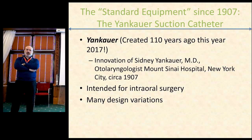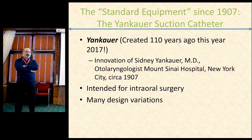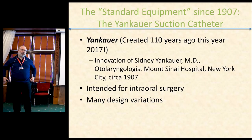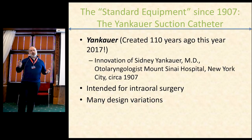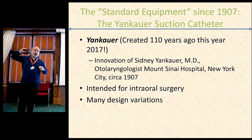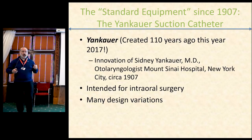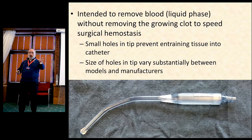The standard equipment we have available was invented over 110 years ago in New York City by Sidney Yankauer. He was an otolaryngologist at Mount Sinai Hospital. He intended this for intraoral surgery in a day and age when ether was the major anesthetic used in the United States. Cautery and ether don't mix, especially in the oropharynx, so hemostasis was direct pressure and absorbable chromic gut suture. The purpose of that suction catheter was to remove blood from the bleeding phase so you could locate the bleeder, put direct pressure, and put a stitch through the mucosa. These catheters are designed to not pull the clot off the bleeding surface — simply to evacuate blood so you can identify the site of bleeding and stop it.